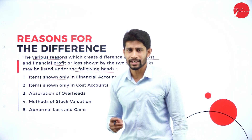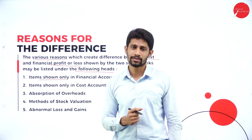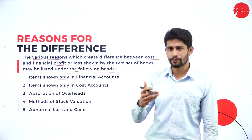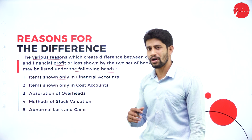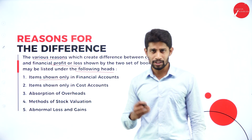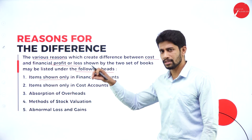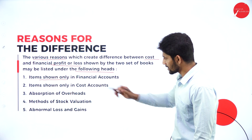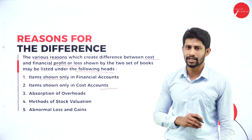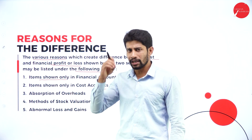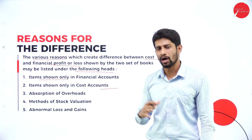The first reason: items shown only in financial accounts. Sometimes, certain items are shown only in financial accounts and those items are not shown in cost accounts. For example, profits — if a profit is received, that profit is shown only in the financial accounts and not in the cost accounts. Because of this, you can see the difference in profit between the financial books and the costing books.